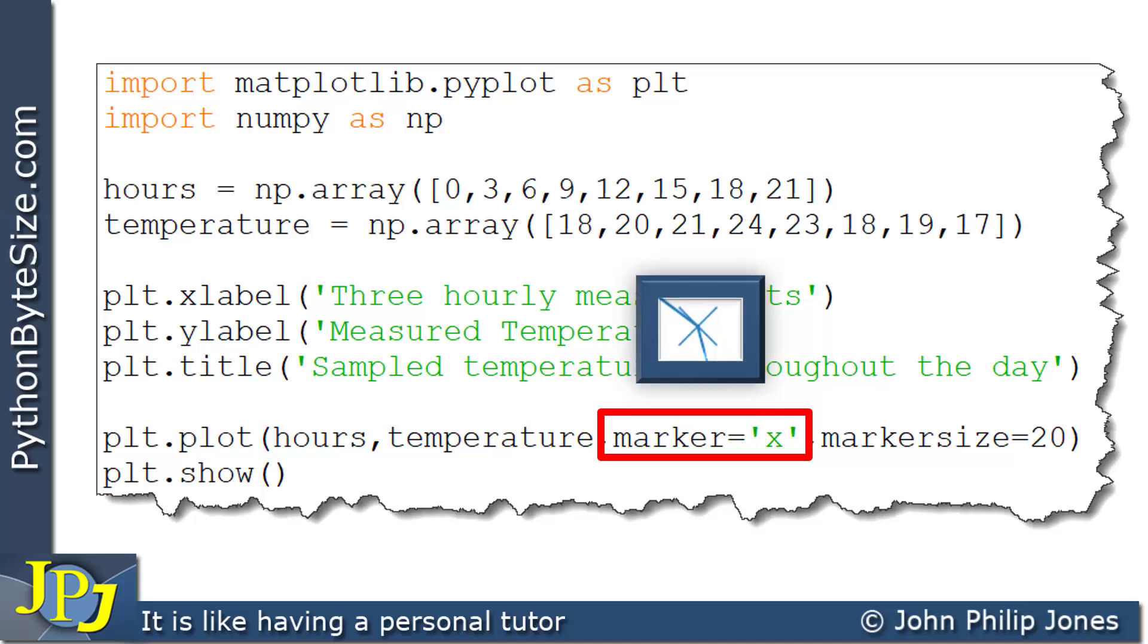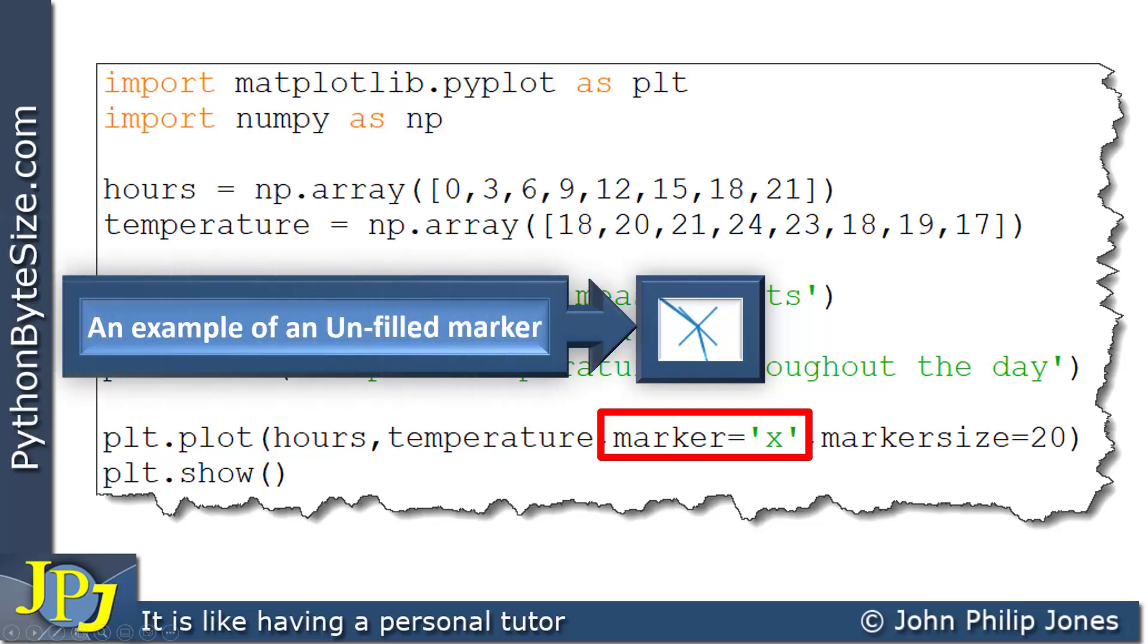And you can see it is an X, but it's drawn with thinner lines. Now this kind of marker is referred to as an example of an unfilled marker. And again, I'll come on to discuss this a little later in this video.